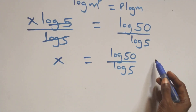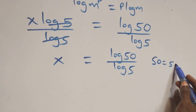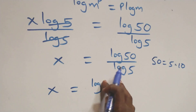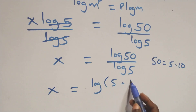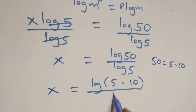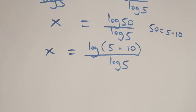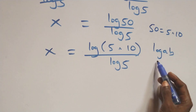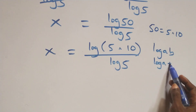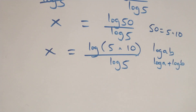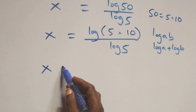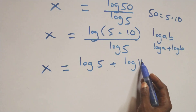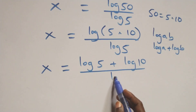The next step here, we can express 50 as 5 times 10. At this here we have x equals to log of 5 times 10 over log 5. This follows the law of logarithms where log a times b is the same thing as log a plus log b. And this here we have x equals to log 5 plus log 10 over log 5.